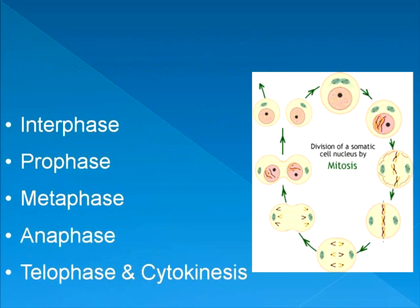So these are the phases of a cell. We have interphase, prophase, metaphase, anaphase, telophase, and a phase called cytokinesis. To remember these, the acronym IPMAT is useful — it just sounds a little weird.